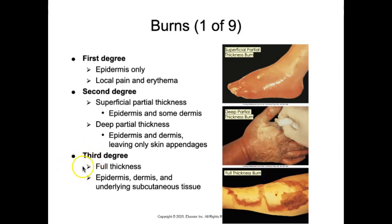Third degree burns are full thickness burns in which the epidermis, dermis, and underlying subcutaneous tissue have been destroyed, resulting in a loss of dermal elasticity and a dry, leathery appearance. Distal circulation may be compromised due to edema, and there is a threat of compartment syndrome, where compression of blood vessels, veins, muscles, and abdominal organs occurs. An escharotomy is performed to allow the tissue to decompress. Patients with this type of burn may feel no pain because all nerve endings have been destroyed.